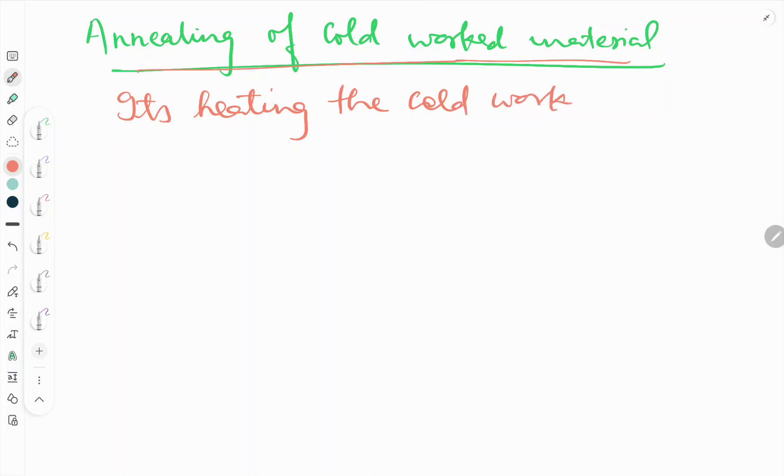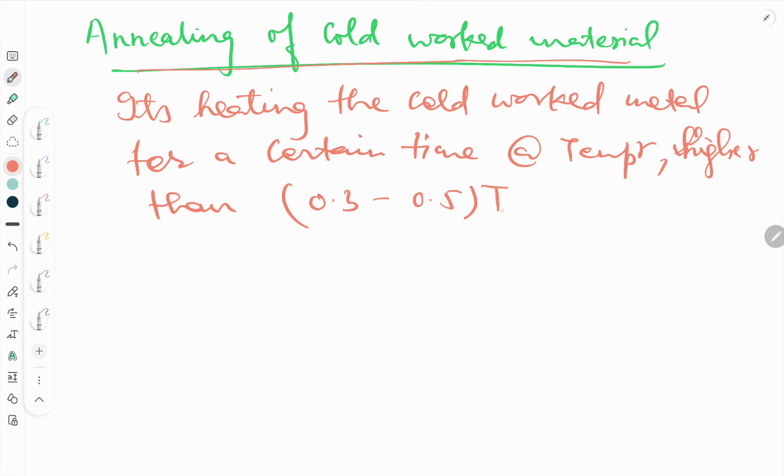The cold worked metal is heated for a certain time at a fixed temperature which is higher than recrystallization temperature, that is in the range of 0.3 to 0.5 of Tm of any metal.